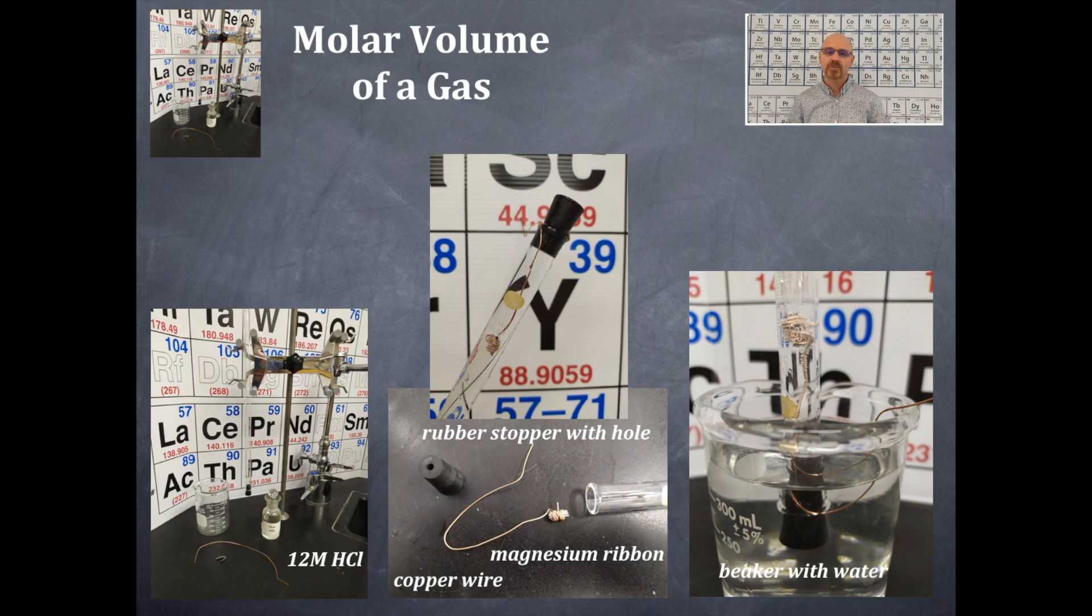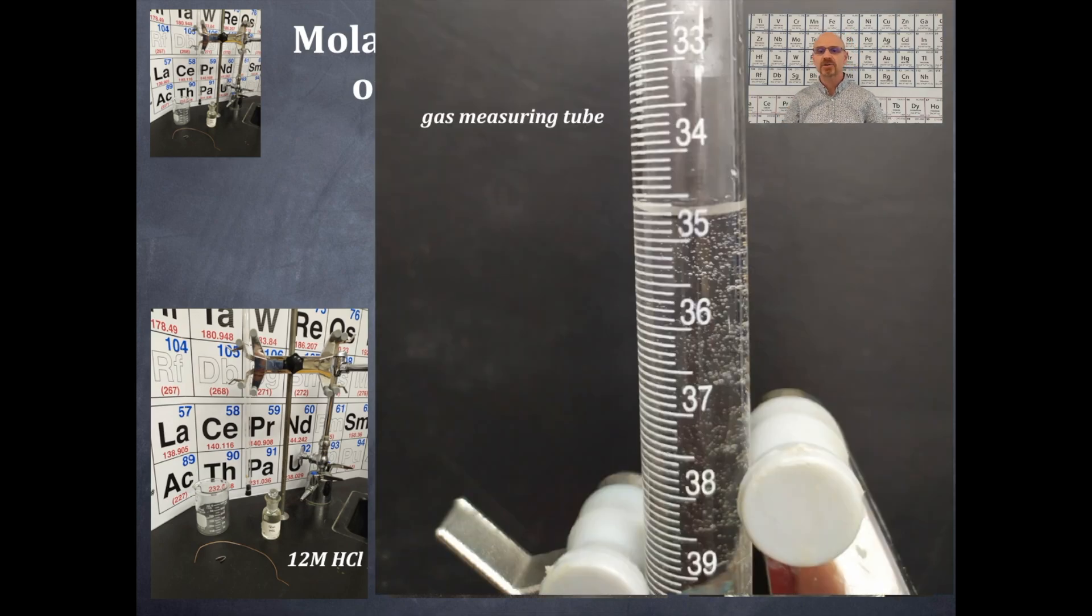Now, 12 molar hydrochloric acid is more dense than water. Since it's more dense than water, then it will fall from the top of the tube and go down through the gas measuring tube, and it will react with the magnesium ribbon very quickly. This is a single displacement reaction, and you get hydrogen gas and magnesium chloride as products. And so you're going to allow that hydrochloric acid to fall down inside the tube, react with that magnesium ribbon. It will not significantly react with the copper wire, so the copper wire will stay there completely intact, but it will react with the magnesium ribbon very vigorously, produce that hydrogen gas, and then that's the hydrogen gas that is collected.